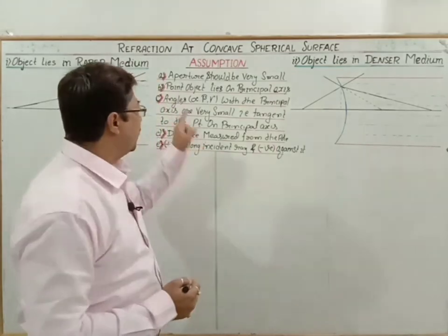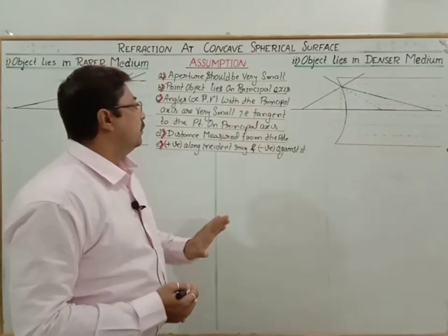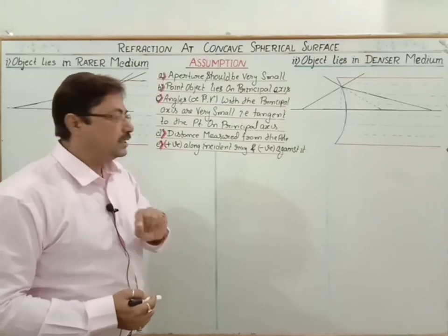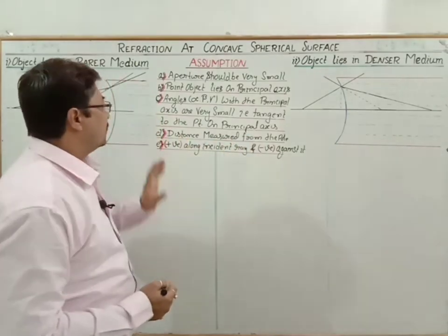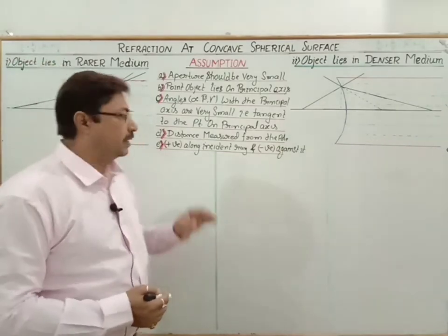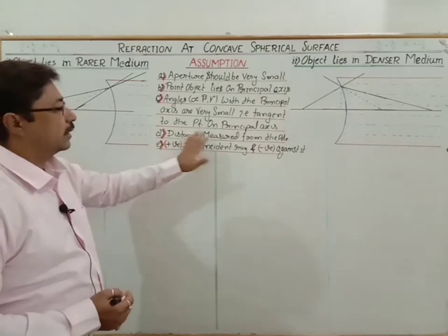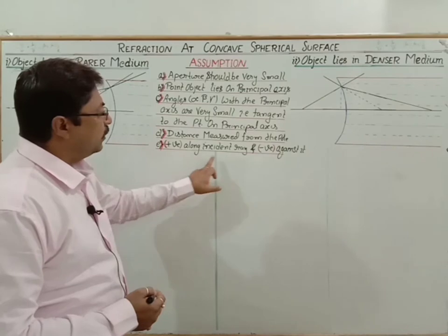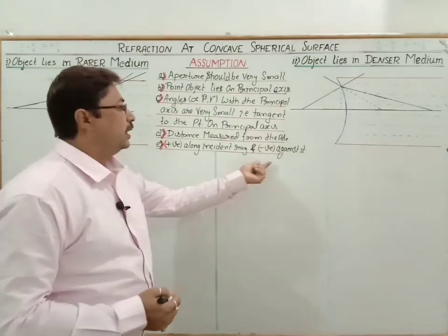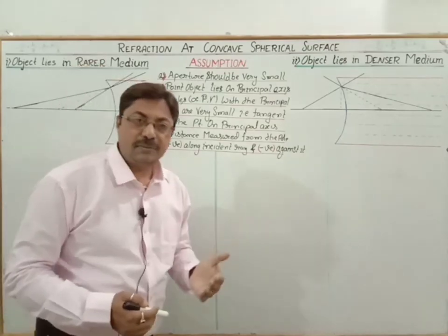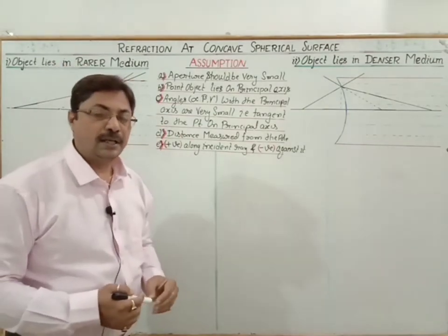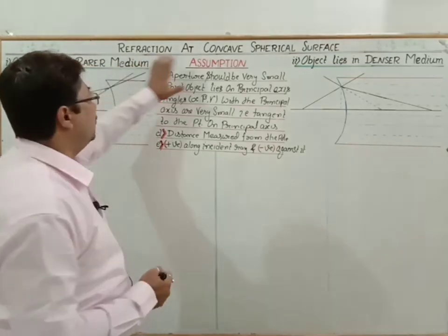The angles alpha, beta, and gamma formed due to the incident ray, the refracted ray, and the normal from the center of curvature — those angles with the principal axis are also very small. We consider them so small that the tangent to the point on the principal axis represents them. This is the third assumption. Fourth assumption: distances are measured from the pole. Along the incident ray direction is positive and against it is negative.